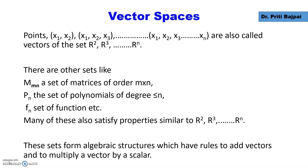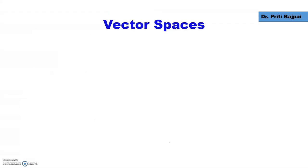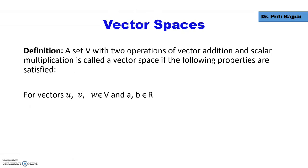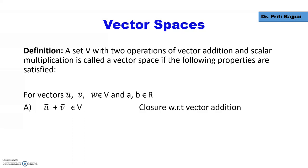All these sets form algebraic structures where there are rules defined: how we should add two vectors, and how we should multiply a vector by a scalar. Now let's come to the definition of a vector space. Any set where two operations are defined — one of vector addition and the other of scalar multiplication — and if all the vectors in that set satisfy the following properties, we say that this set is a vector space.